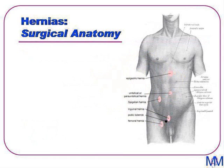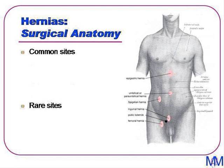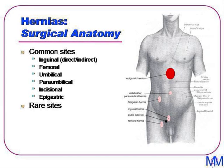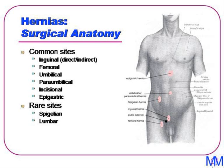Next to be considered is the anatomical site of herniation. There are several very common sites and many much rarer sites. The common sites include inguinal hernias, femoral hernias, umbilical and paraumbilical hernias, incisional hernias, and epigastric hernias. Rarer hernias include Spigelian hernia, which classically occurs below the arcuate line in the linea semilunaris. Other hernias include lumbar hernias at the back and obturator and gluteal hernias.